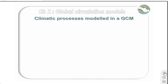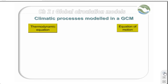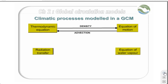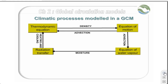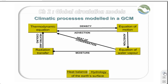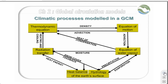So, what climatic processes are modelled in a GCM? GCMs are based on thermodynamic equations and equations of motion, which are linked by density transforms and advection. Furthermore, radiation transfer functions and equations of water vapour are also interlinked through advection, cooling and heating, moisture, and heat of condensation. All of these separate functions are also interlinked with the heat balance and hydrology of the Earth's surface, through transfers such as heat energy, snow cover feedback, precipitation, and evaporation.